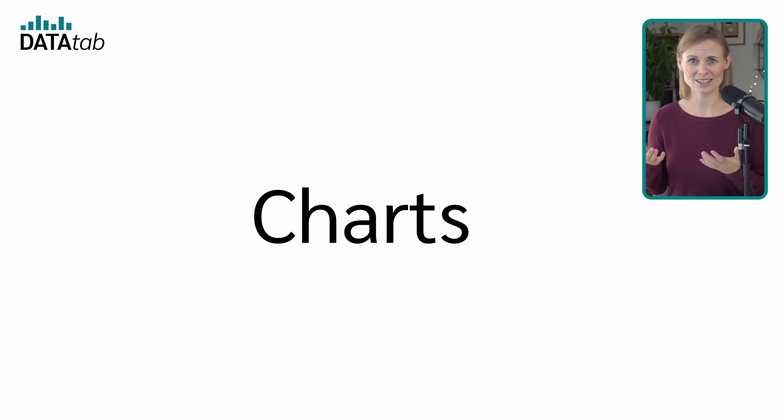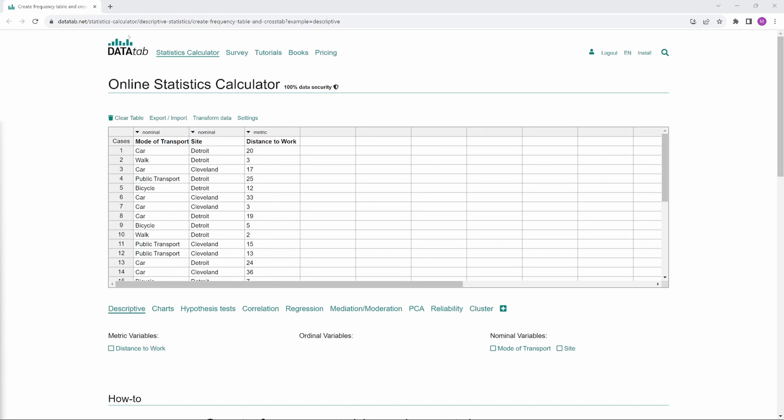And what about the charts? Let's take a look at the most important ones. To do this, let's simply use DataTab. If you like, you can load this sample data set with the link in the video description, or you just copy your own data into this table. Here below you can see the variables: distance to work, mode of transport, and site. DataTab gives you a hint about the level of measurement, but you can also change it here.